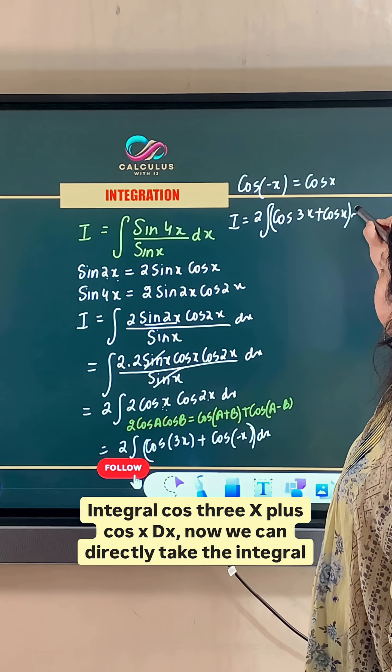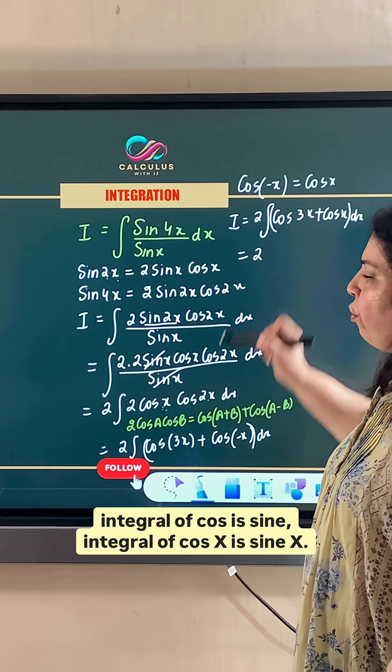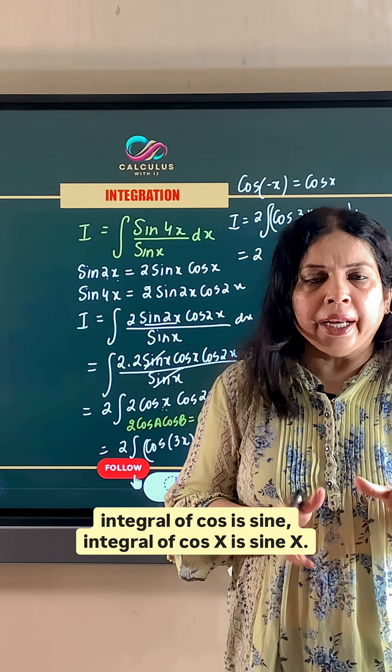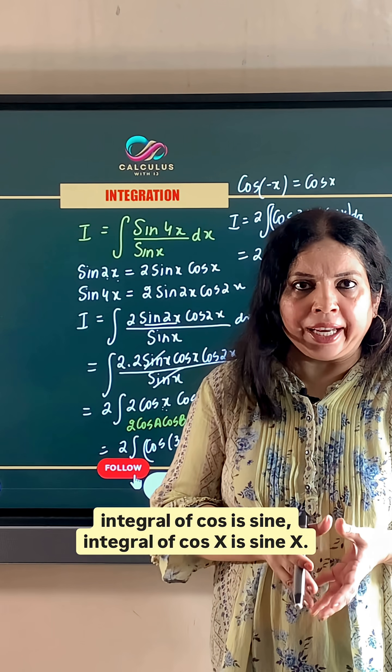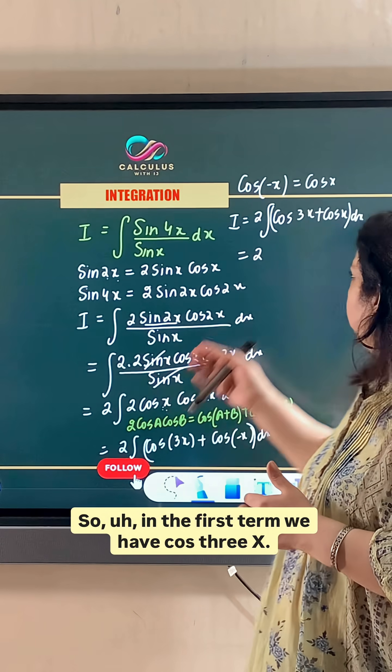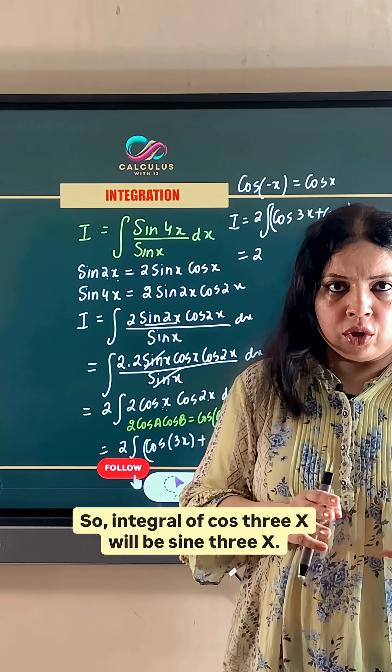Now we can directly take the integral. Integral of cos is sin. Integral of cos x is sin x. So in the first term, we have cos 3x. So integral of cos 3x will be sin 3x.